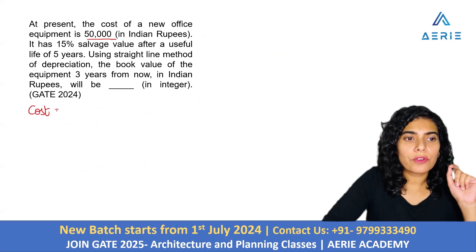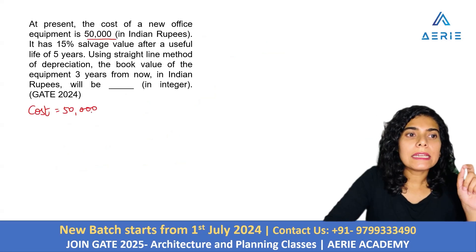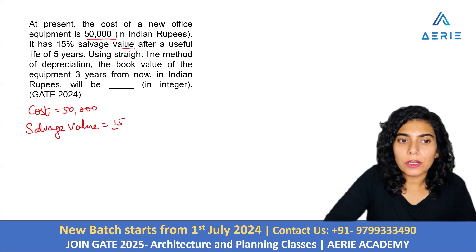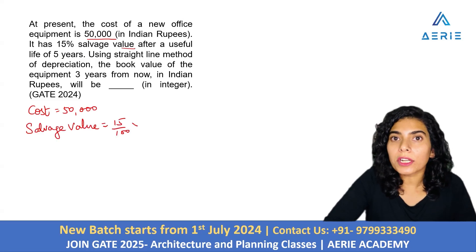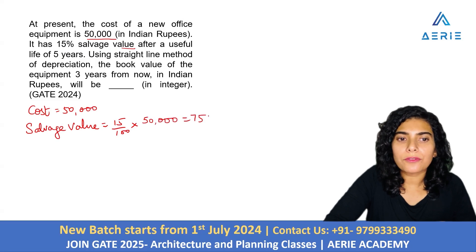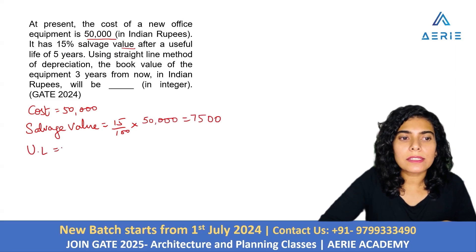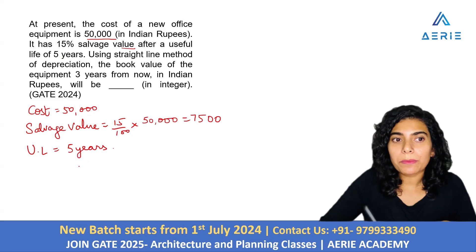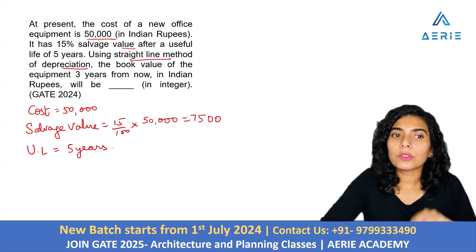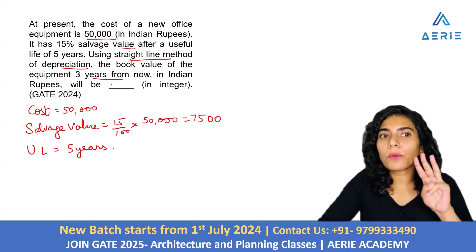The cost is 50,000. The salvage value is 15% of cost, so that is 7,500. The useful life is 5 years. Using the straight-line method of depreciation, we need to find the book value of the equipment 3 years from now.